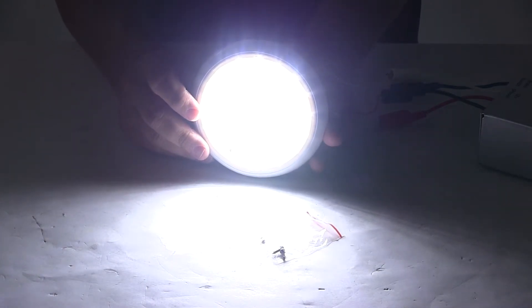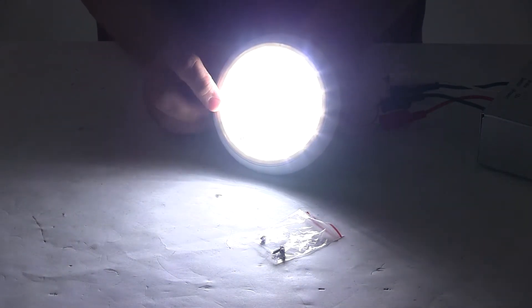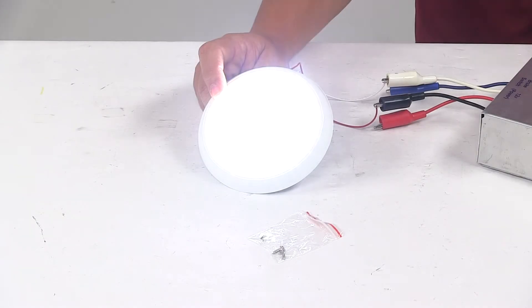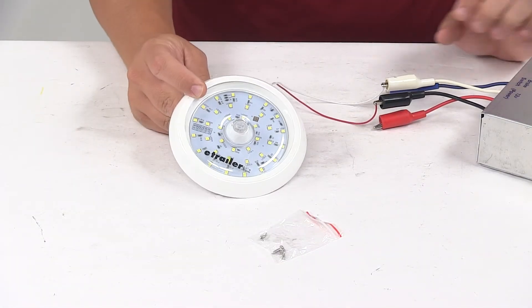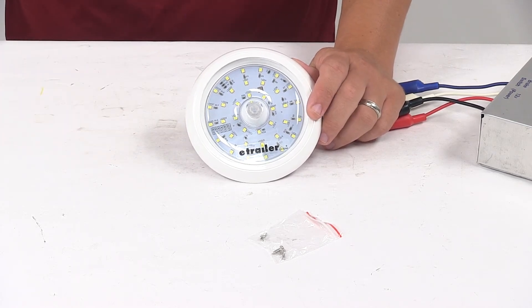Wattage is 18 watts, voltage is 12 volts, and amperage is 1.5 amps. The unit has a built-in motion sensor directly in the center of the light. That's going to do it for today's look at this LED dome light with the built-in motion sensor.